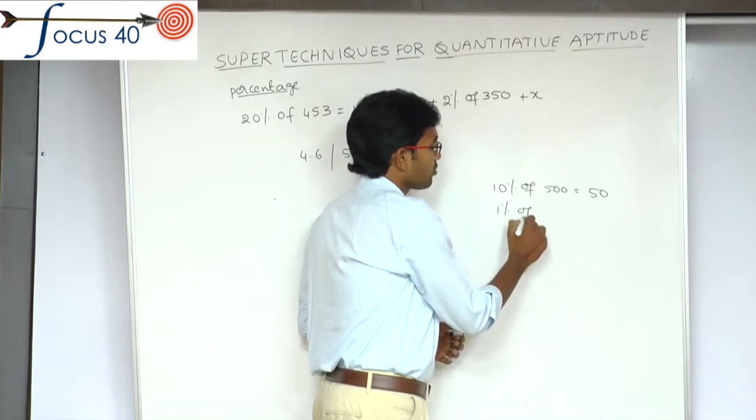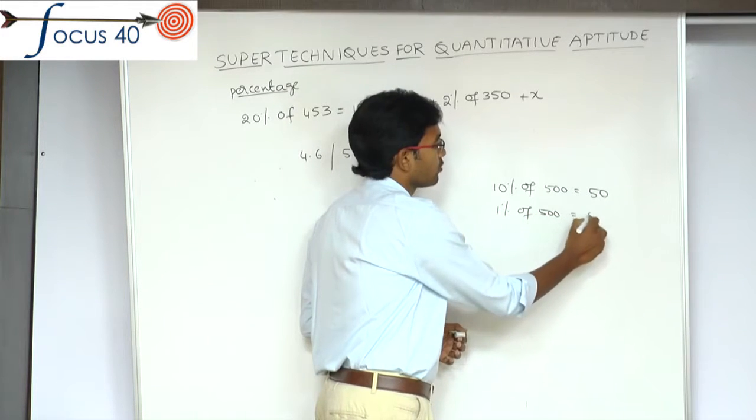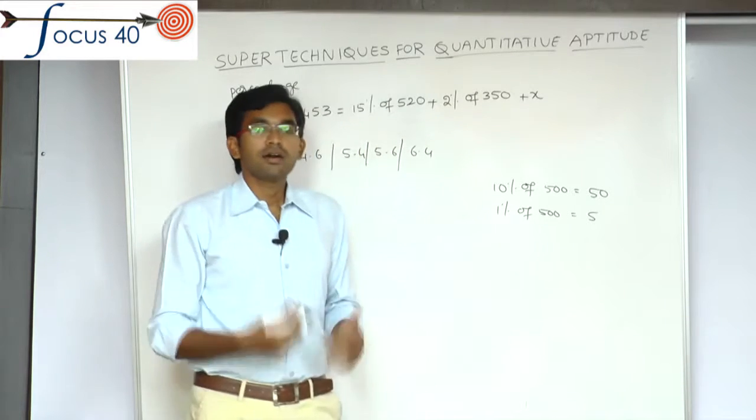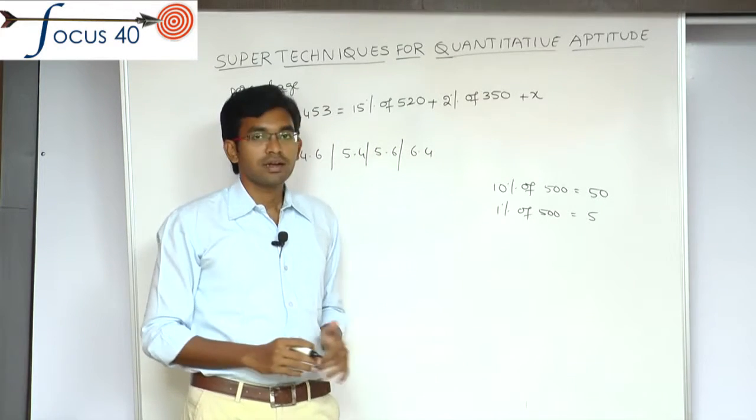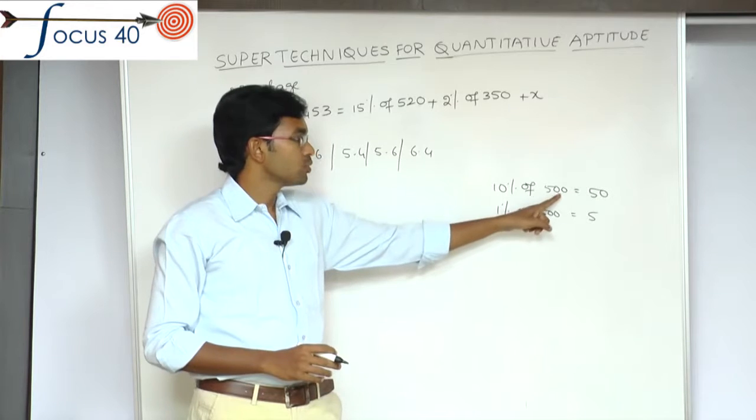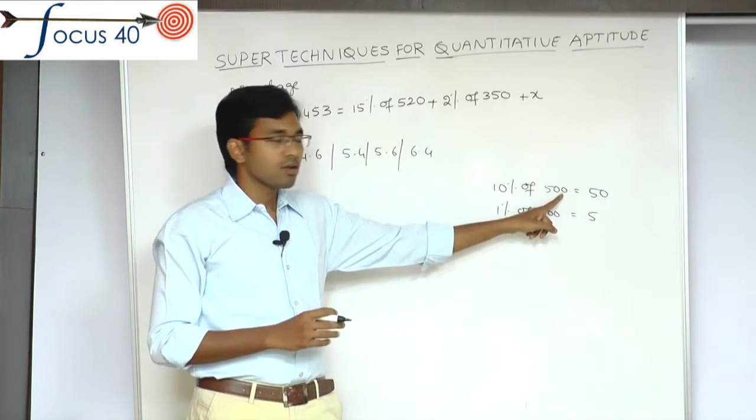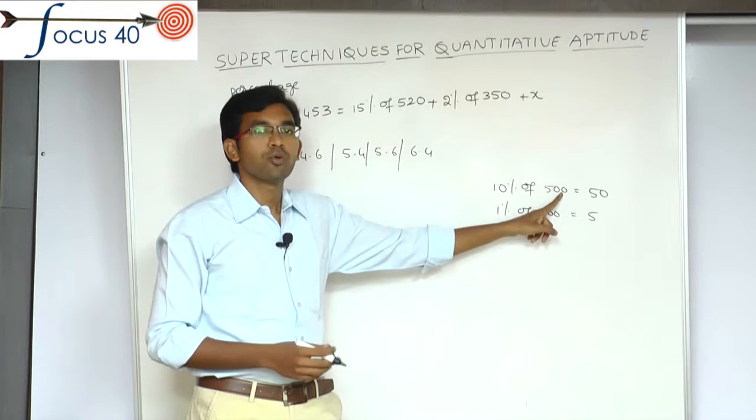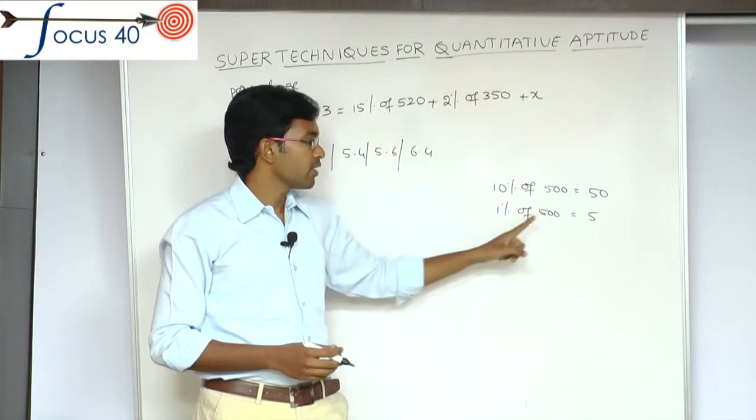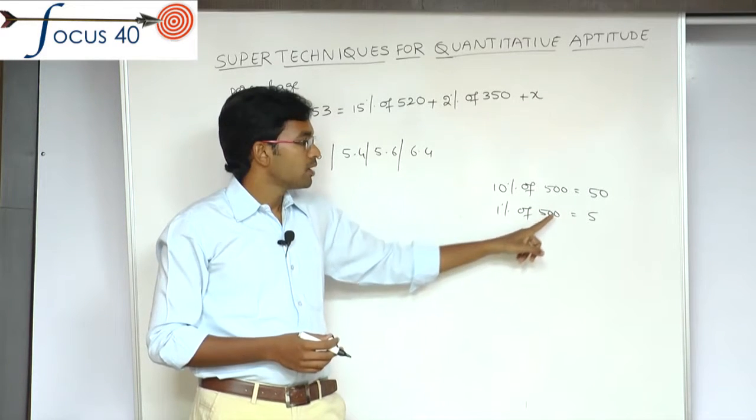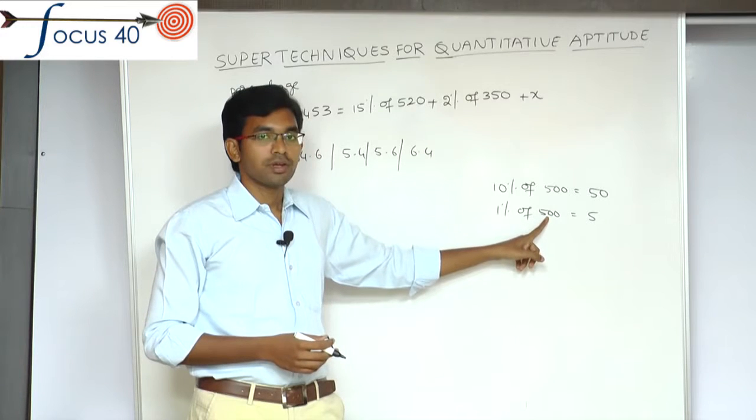1% of 500 equal to 5. So, for any number, to find 10%, place a dot before the last digit. 500 becomes 50.0 that is 50. To find 1%, place a dot before the last two digits. That is 5.0 which is 5.